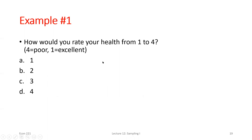Let's think about some examples. Say I asked everybody in this class to rank their health from one to four, and I used your responses to make inferences about the population as a whole. One selection bias that would exist: you're all the same age. I over-selected from one age group, and that age group likely has higher average health than the population as a whole, because there are 80-year-olds in the population.